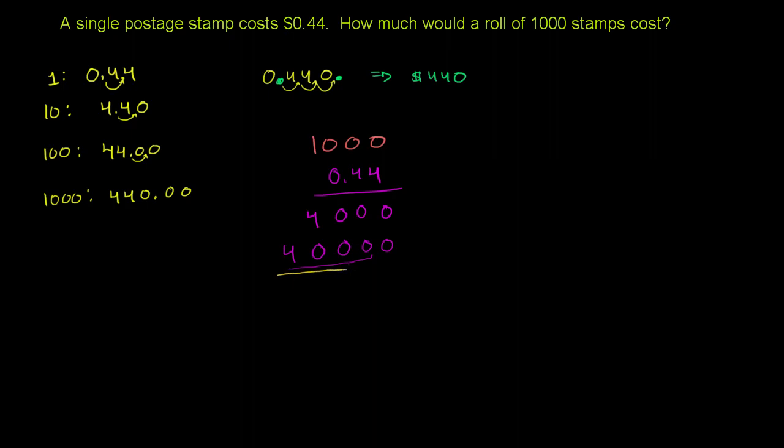So if it was 1,000 times 44, we would get 0 plus 0 is 0. 0 plus 0 is 0. 0 plus 0 is 0. 4 plus 0 is 4. 4 plus nothing is 4. And if you ignore the decimal, that makes a lot of sense. Because 1,000 times 4 is 4,000, and 1,000 times 40 would be 40,000. So you would get 44,000. But this, of course, is not a 44. This is a 44 hundredths. We have, between the two numbers, two numbers behind the decimal point. So we need to have two numbers behind, or to the right of the decimal point in our answer. 1, 2, right over there. So once again, we get $440 for the 1,000 stamps.